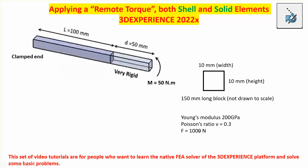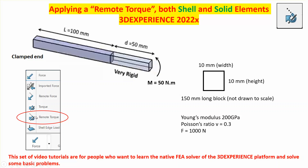I just noticed there is a mistake here — there is no force F; that F is inherited from the previous video where I applied a force at this end, so please ignore it. The moment is 50 newton meters. Here is where the remote torque icon appears. When you try to apply a force or moment, you have the option of a force, torque, remote force, or remote torque — and the remote torque is the focus of this video.